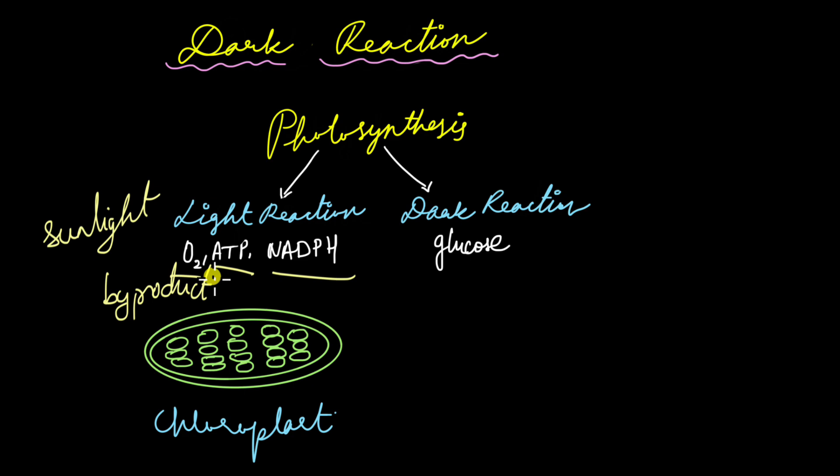We learnt at the end of the video that light reaction products would go on to fuel the dark reaction, would enable this dark reaction to take place in the chloroplast itself. Where the dark reaction takes place within the chloroplast actually depends on where the products of the light reaction are formed.